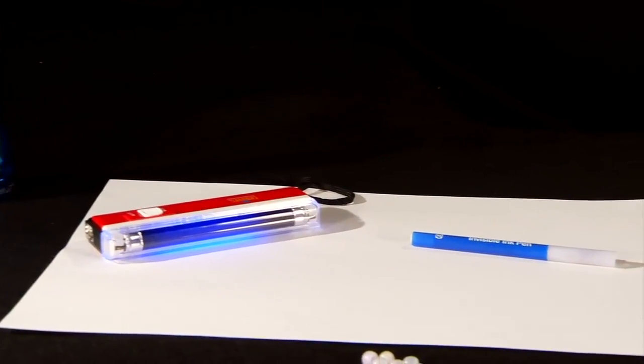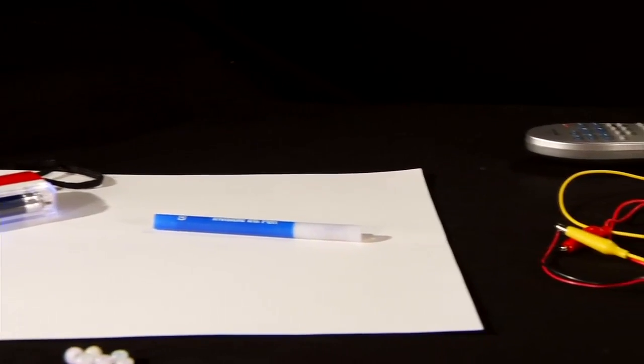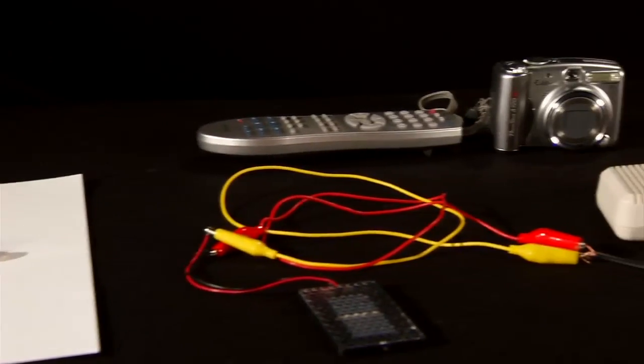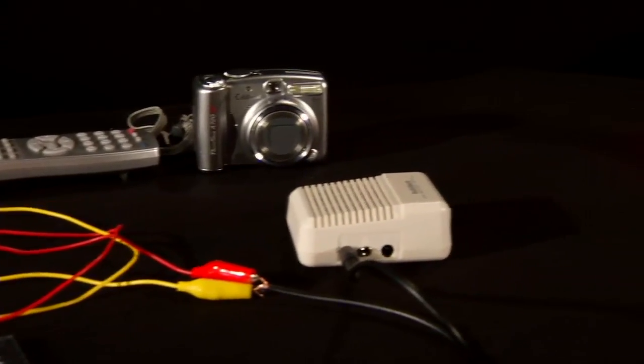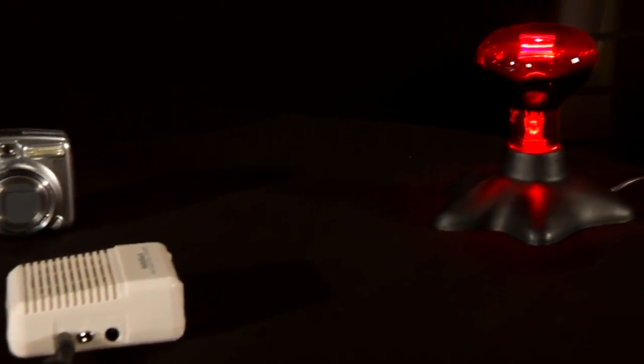This activity includes several stations representing different types of light. For each station, there is a source, the thing that produces the light, and a detector, the thing that allows you to know the light is there.